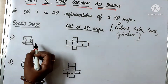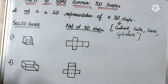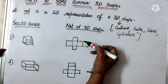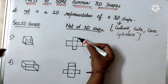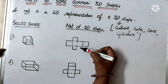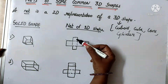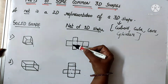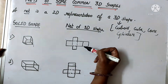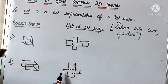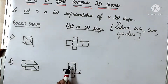For example, the cube — now what is the net of this cube? If you open a cube, it will get opened in this form. This is the net of a cube — you can see it is having six faces: 1, 2, 3, 4, 5, 6. Similarly, the net of a cuboid — if you open a cuboid, it will appear in this form. This is the net of a cuboid.